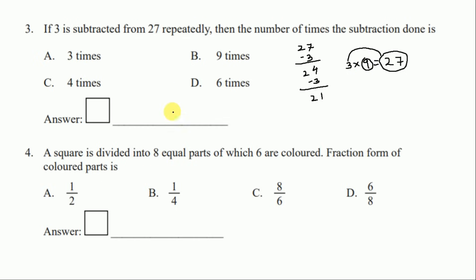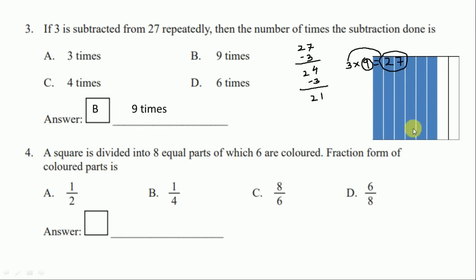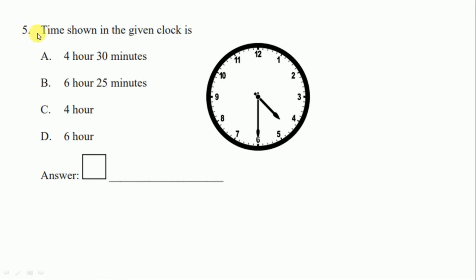Question number four: a square is divided into eight equal parts of which six are colored. The fraction form of the colored parts — we have one square with eight equal parts and six are colored. For the fraction, we write the colored parts divided by total parts: six by eight. So the correct option is D, six by eight.